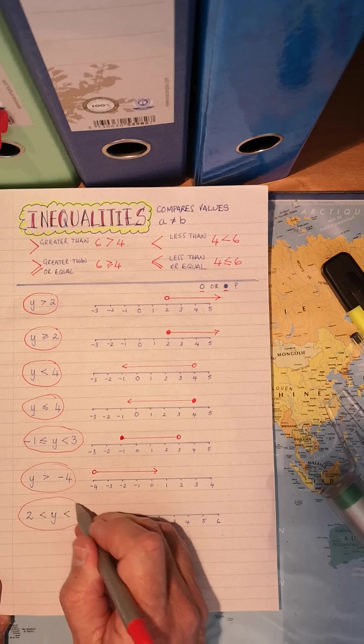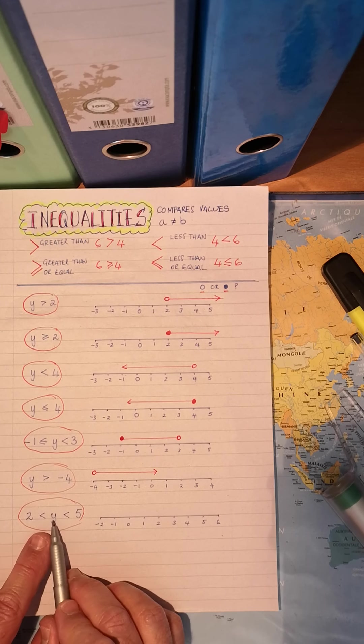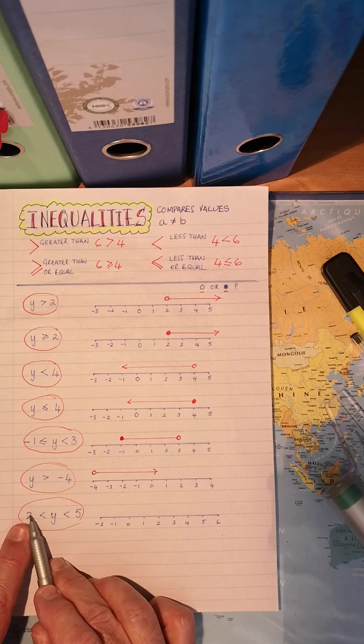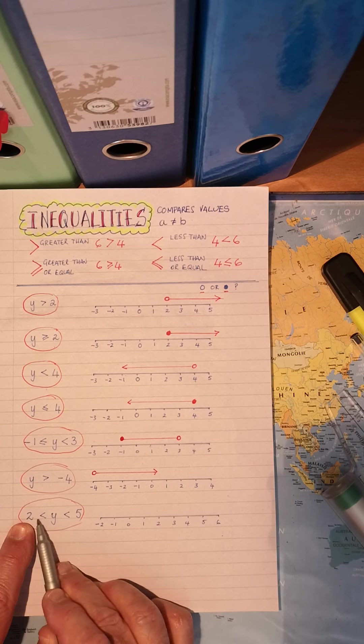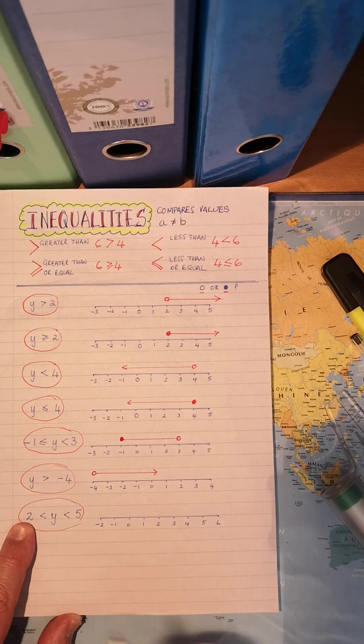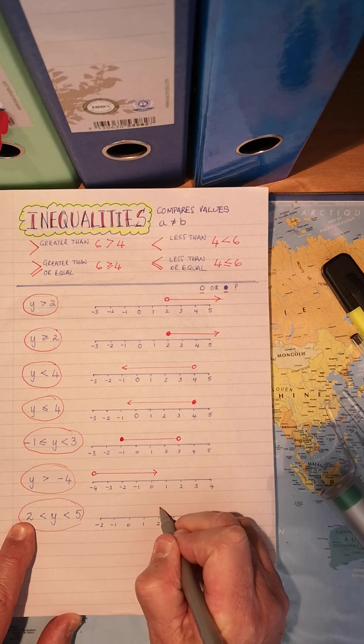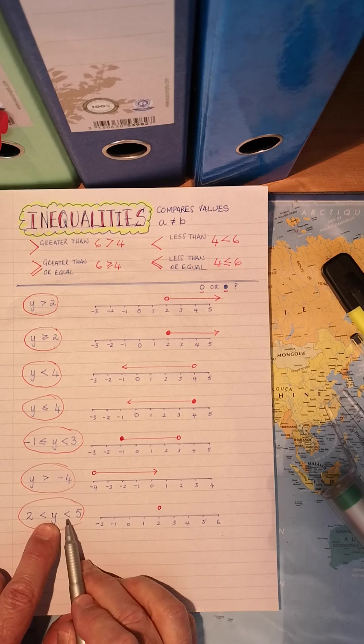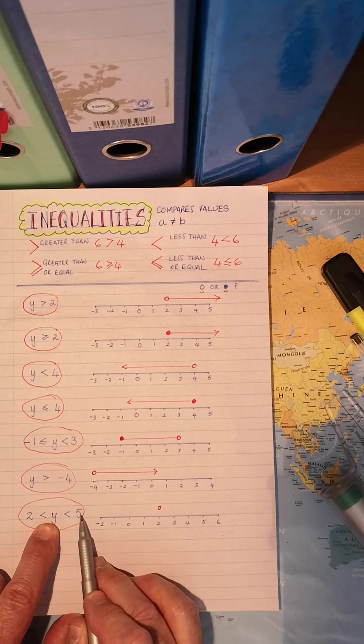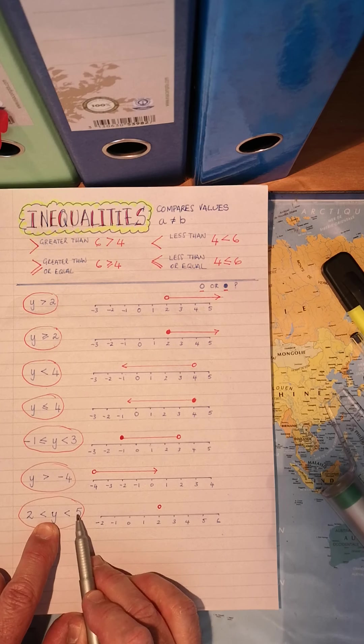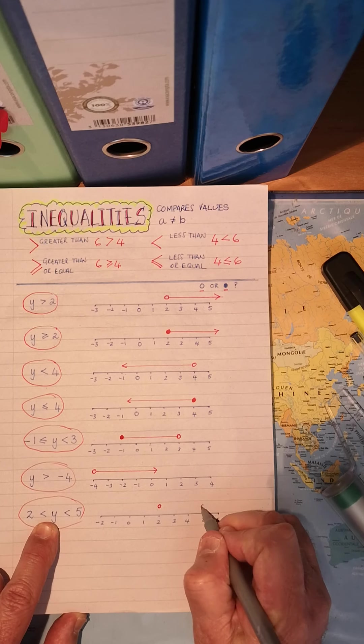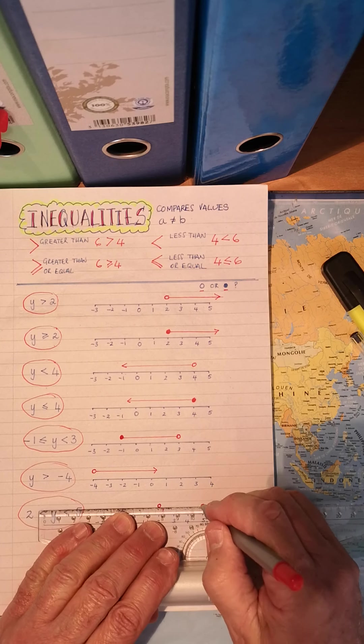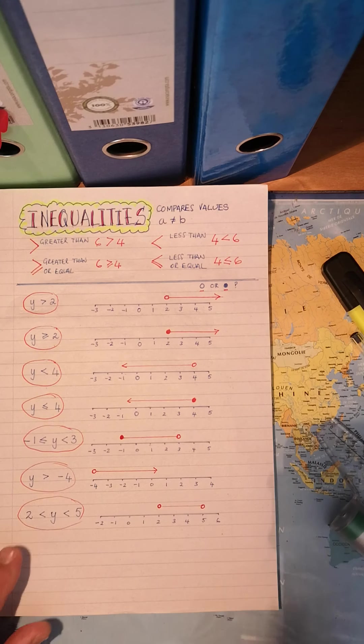Let's look at this one. Two. Now watch this one. Y is greater than two. Y is greater than two. There's no equal to. So Y is greater than two. Find two. Open circle. Correct. And Y is less than five. Not less than and equal to. So find five. Open circle. Join them. OK. Look at it again.